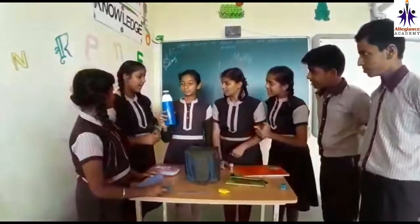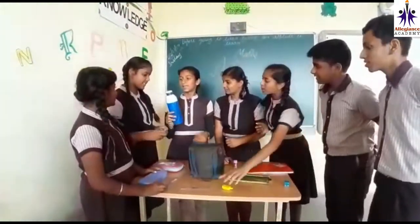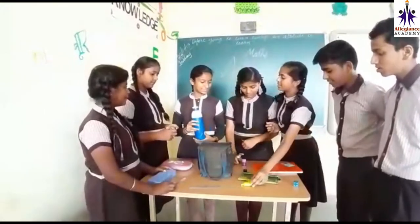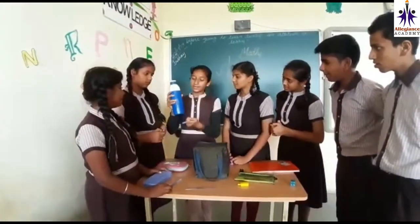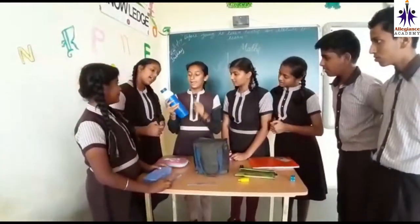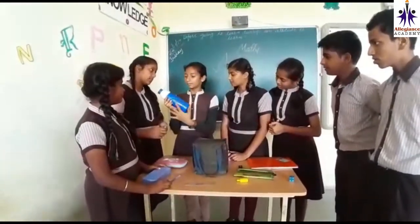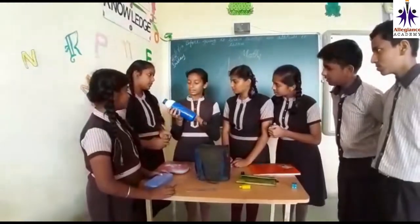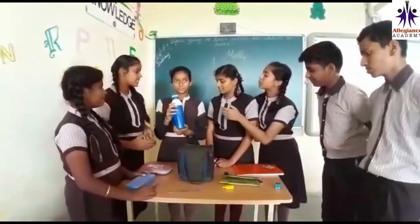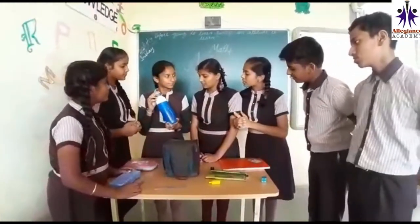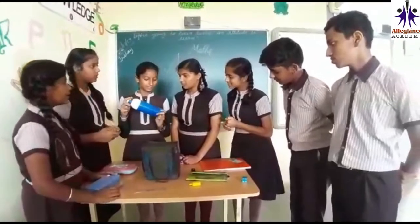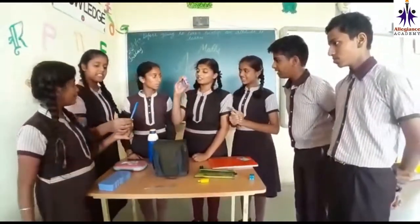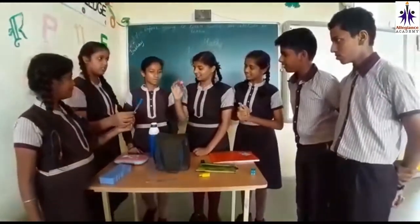This is a cylinder. It also looks like this. It has two bases — one and two. And if we see the remaining portion, it looks like a lateral surface, and it's fully called a surface area. This is also a cylinder. And this is also a cylinder. This is also a cylinder.